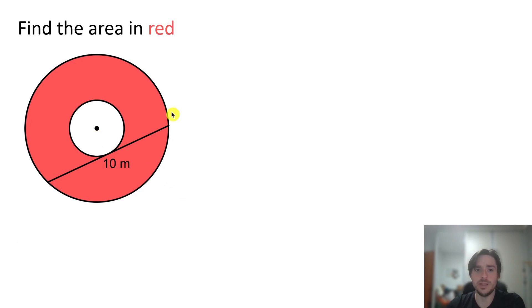How can we calculate the area in red between the outer circle and the inner circle if the only information that we have is that this line here has 10 meters? Let's solve it.